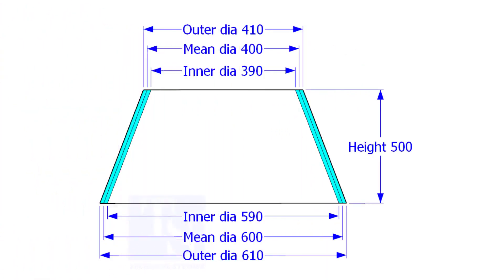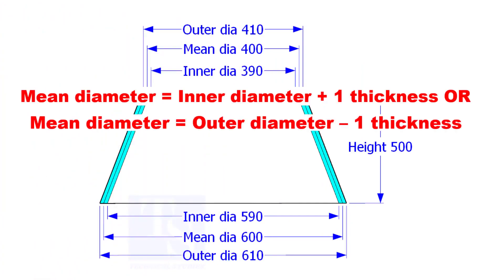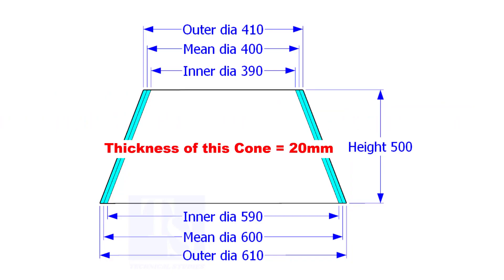Look at the cross section of the cone. What is the mean diameter? It is the center diameter of a circle or a sphere. For example, suppose the inner diameter is 1000 mm and the thickness of the cone is 20 mm, then the mean diameter shall be 1000 plus 20 equal to 1020 mm.